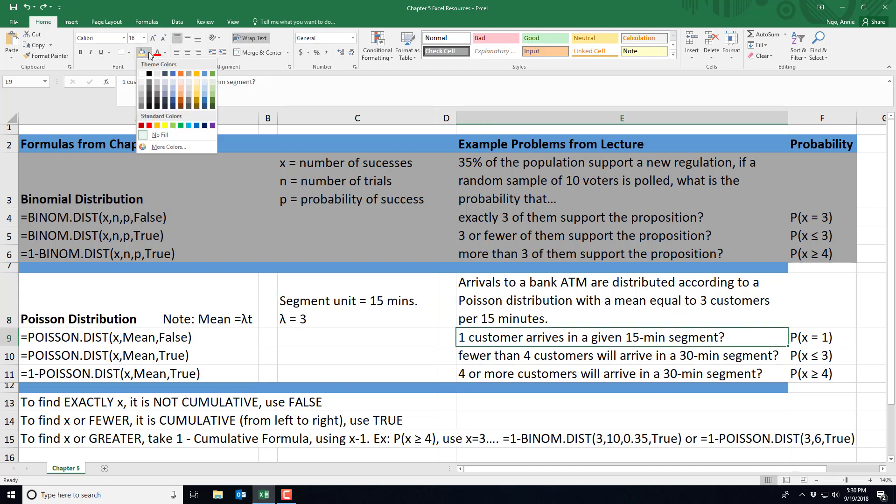In our first scenario we're going to solve for one customer arriving in a given 15 minute segment. We want to make sure we understand the probability. We're looking for exactly one customer arriving so that's the probability that x equals 1. We also need to remember that in Excel when it asks for the mean that will go into our formula, that is our lambda times t.